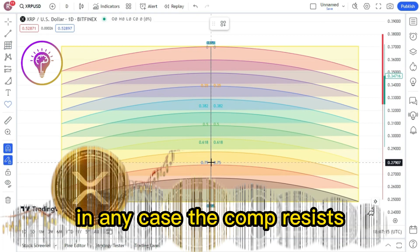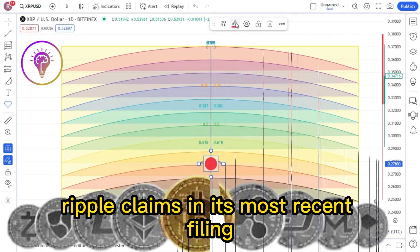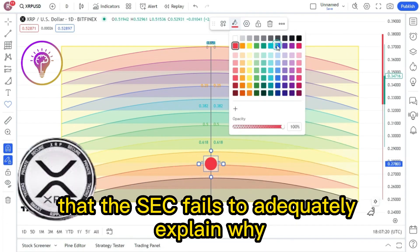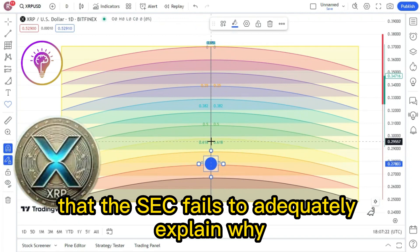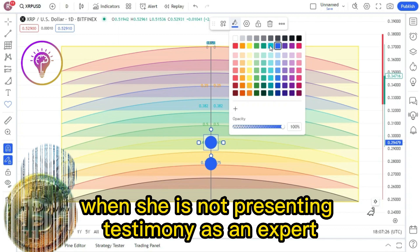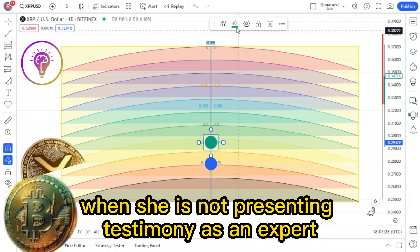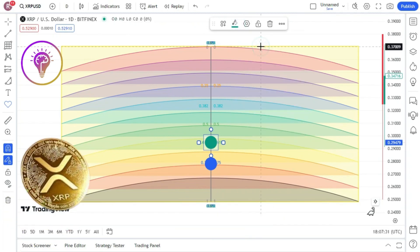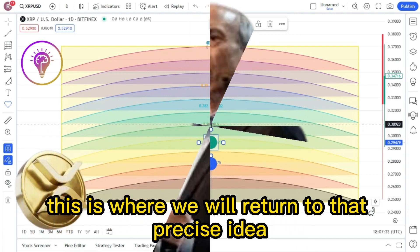According to Ripple, the SEC is accused of engaging in deceitful and devious practices, while debating. Actually, all she does is report the facts as an accountant. That is the point being made here. In any case, the complaint persists. Ripple claims in its most recent filing that the SEC fails to adequately explain why Fox's declaration makes reference to her accountant when she is not presenting testimony as an expert. We will provide you with a copy of the file. This is where we will return to that precise idea.